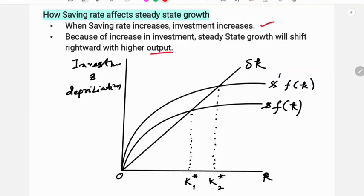Because of the increase in investment, the steady state growth will shift rightward with higher output. The stock of capital will increase, and the capital-labor ratio will increase. The investment function is s as a function of small k, and because of the increase in saving rate, this curve will shift upward.